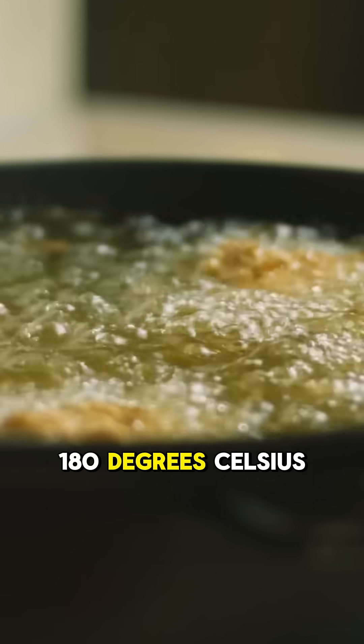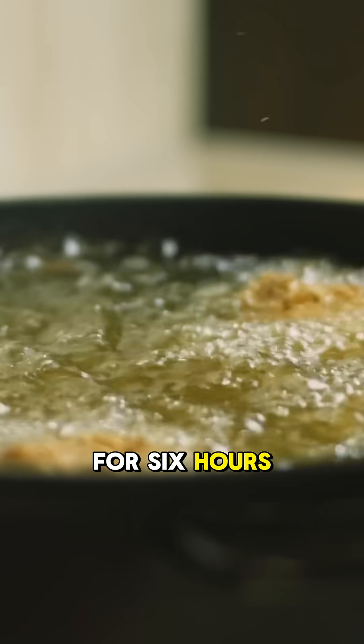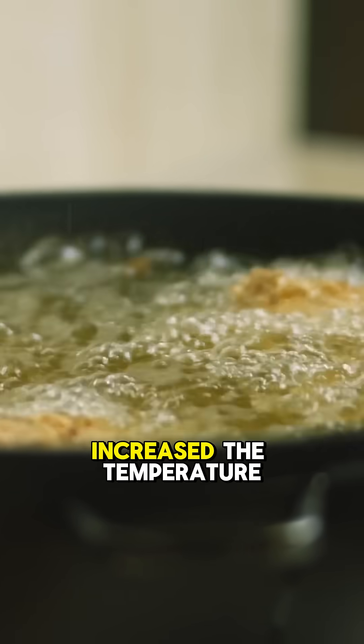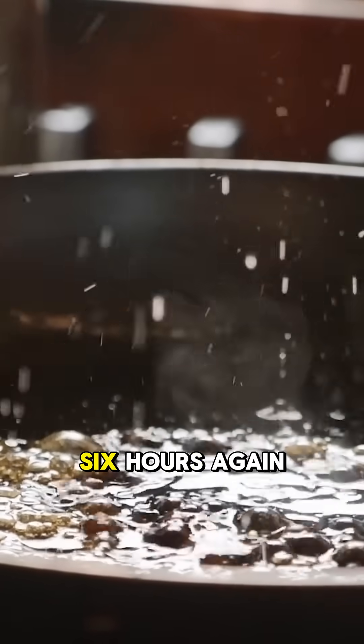They measured them at every 30 degree Celsius increase. They also heated the oils at 180 degrees Celsius, which is 356 Fahrenheit, for six hours. So they did one where they gradually increased the temperature and one where they kept it at a high temperature, 180 Celsius, for six hours.